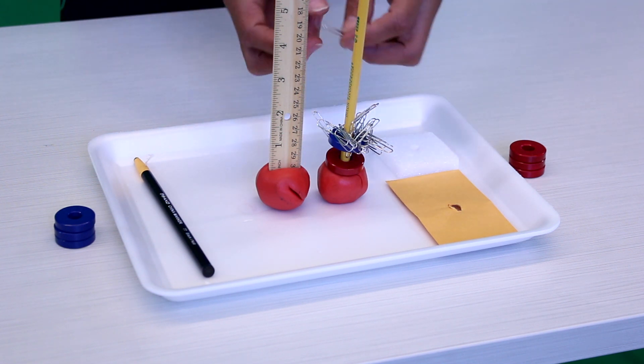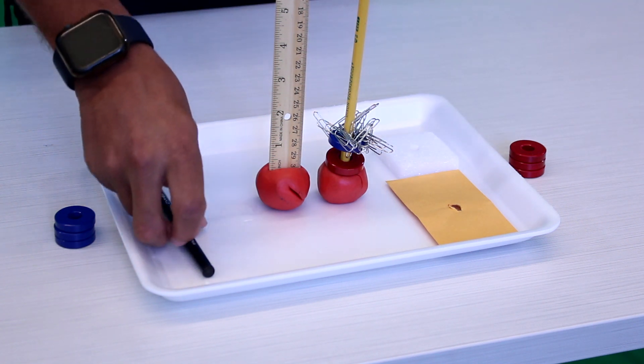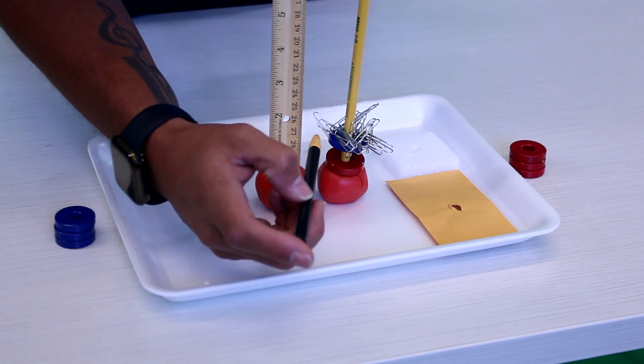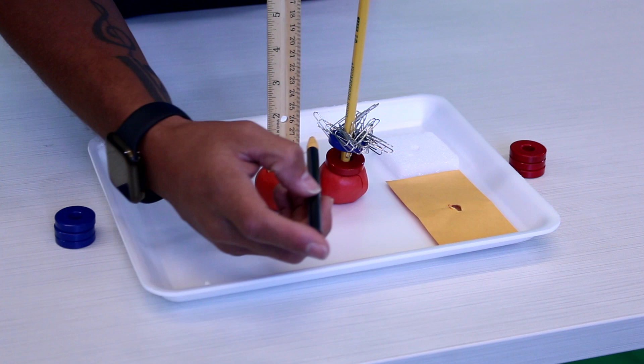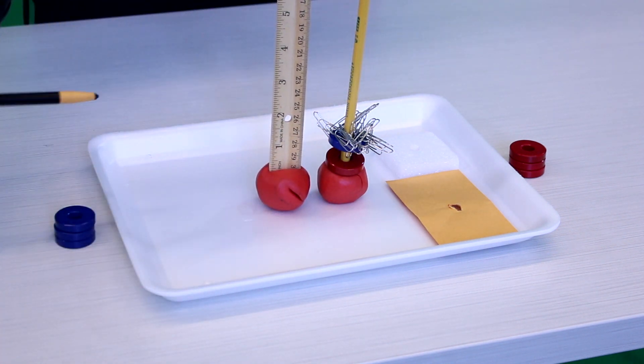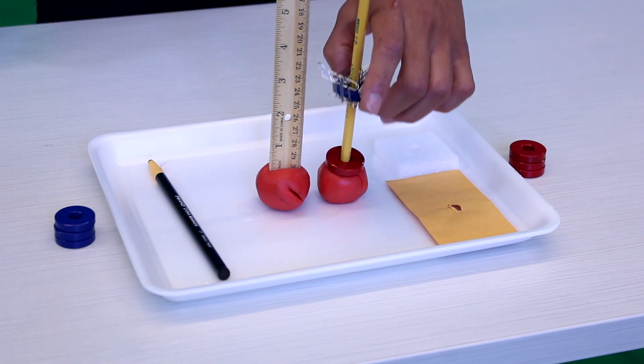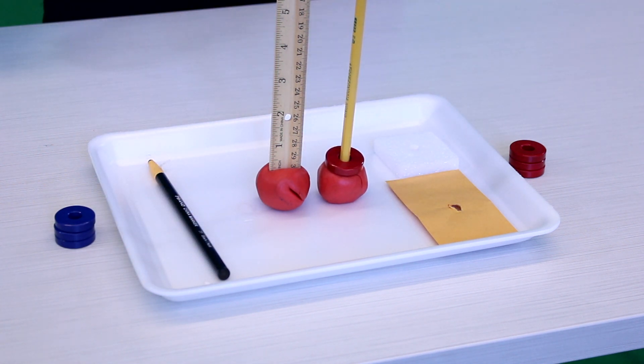So it looks as if it went down a bit, it's about at about one inch, 1.1. All right, let's take that off, let's remove all these paper clips here.